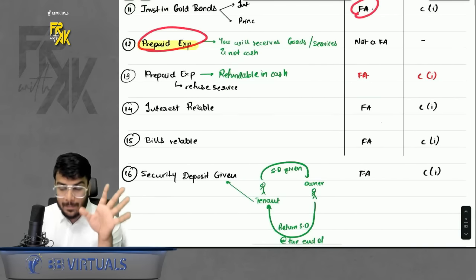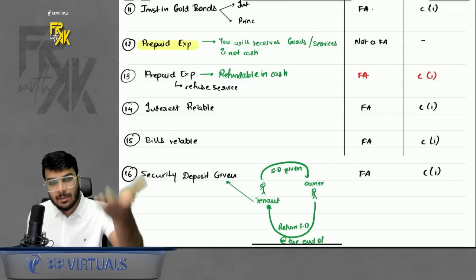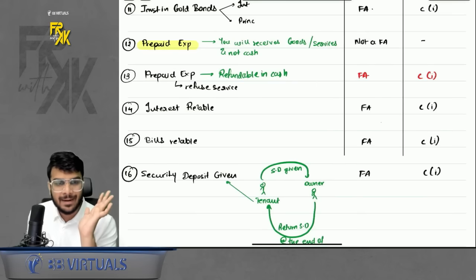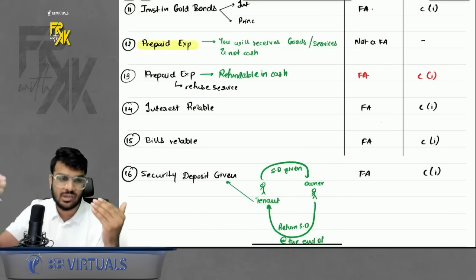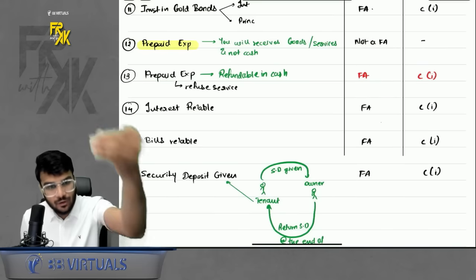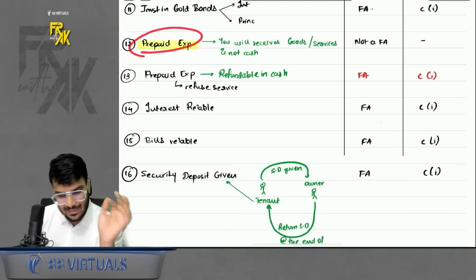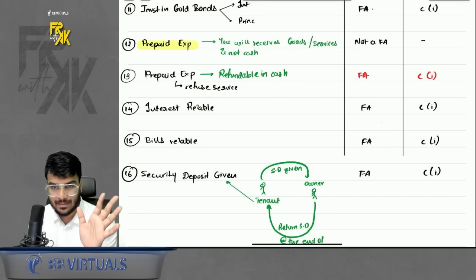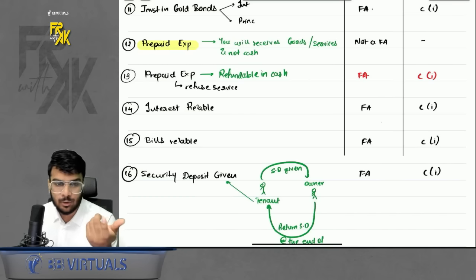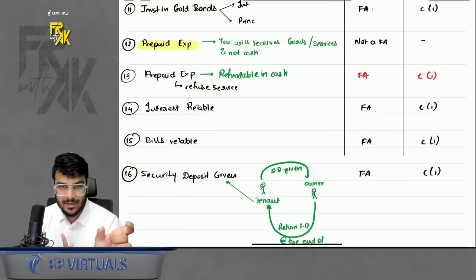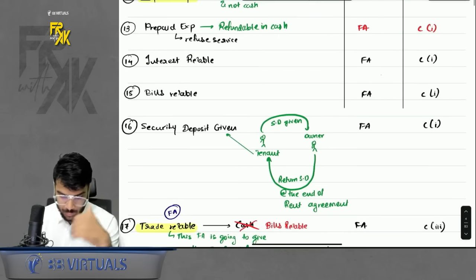What about prepaid expense? For example, if you pay fees in advance for lectures, you have a prepaid expense. Against that, you will not receive cash — you will receive services. So prepaid expense is not a financial asset. However, if the service provider refuses to give the service, the cash becomes refundable, and in that case it will become a financial asset.